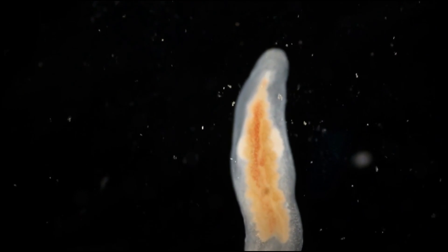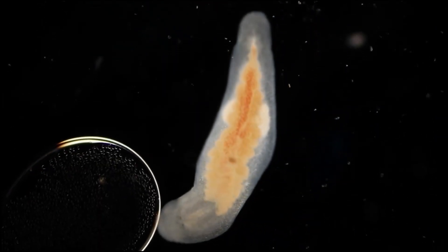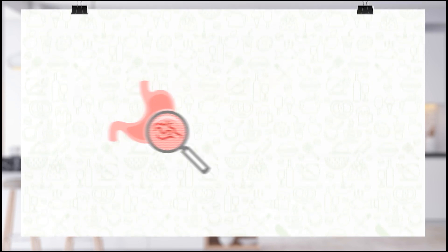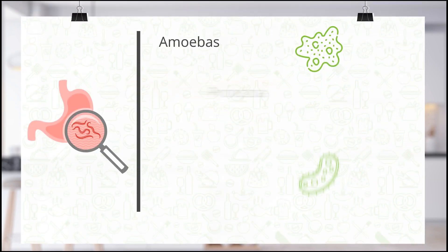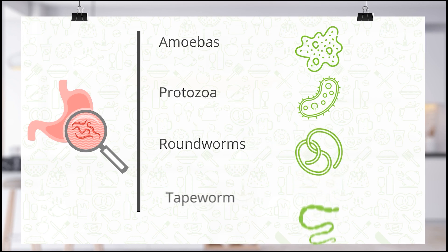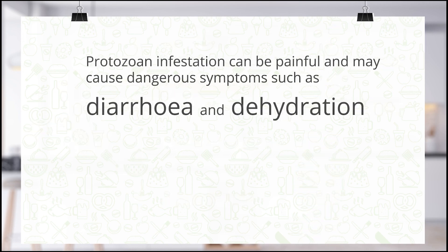Another type of organism that can cause foodborne illness is parasites. Parasites derive food and protection from other living organisms while not giving anything advantageous in return. Parasites that transmit foodborne diseases include amoebas and other protozoa, roundworms, and tapeworms. Protozoan infestation can be painful and may cause dangerous symptoms such as diarrhea and dehydration. Now that you know how microorganisms cause food poisoning, let's talk about different kinds of foodborne illnesses.